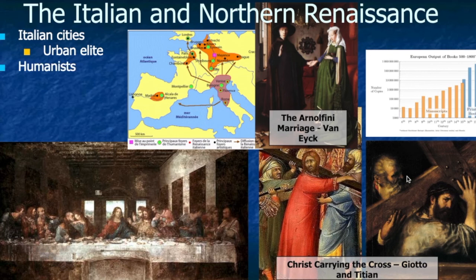The urban elite are going to patronize the arts as a way of generating prestige — showing they are worthwhile citizens because they paid for the statue in the middle of the square. This is primarily an urban event; it doesn't really impact people outside of the cities. The movements I'm about to discuss — humanism and humanists — would fall into that category. Humanism is a challenging philosophy to define; sometimes people start with it being a textual criticism of the classics.